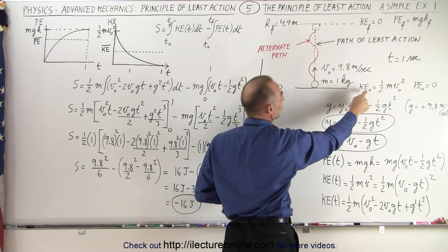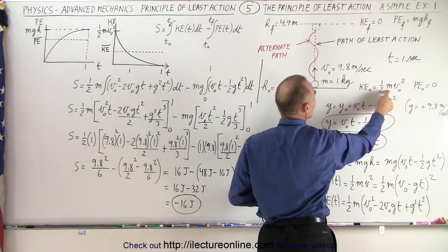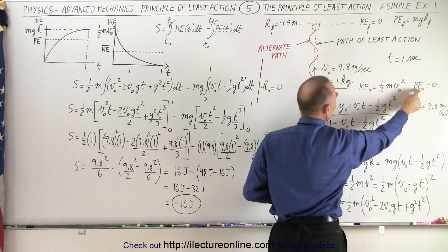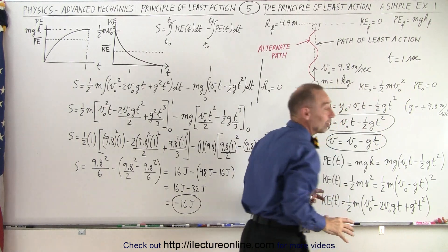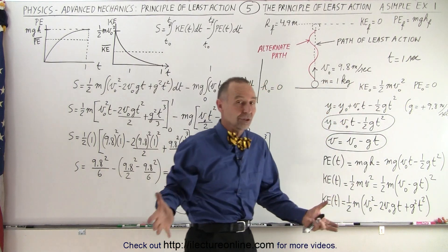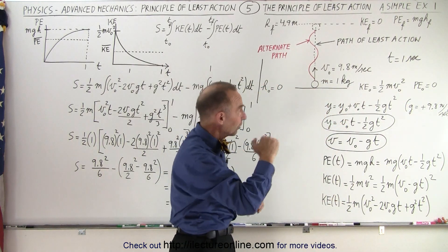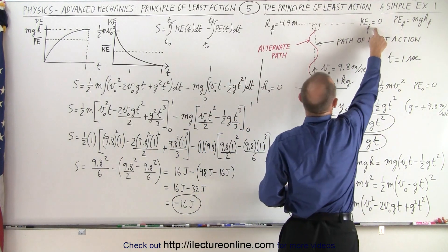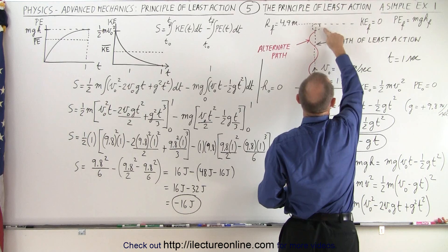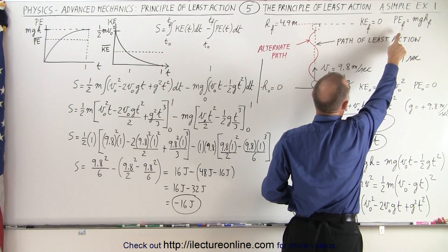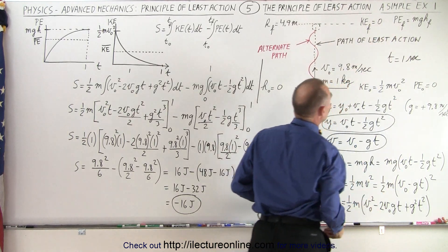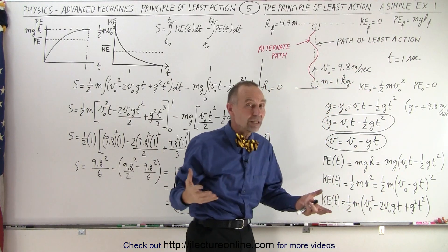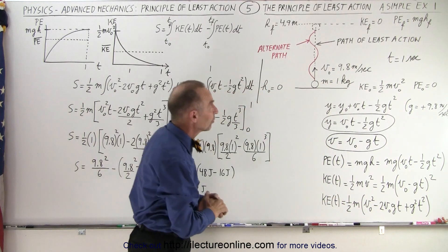The initial kinetic energy will be one-half m times initial velocity squared. The initial potential energy will be equal to zero because it starts on the ground. The final kinetic energy will be zero when it reaches that point, and the final potential energy will be mgh, h being the final height.